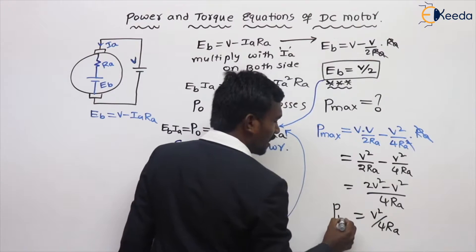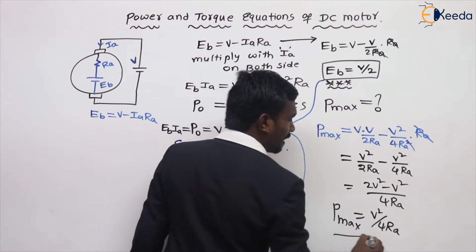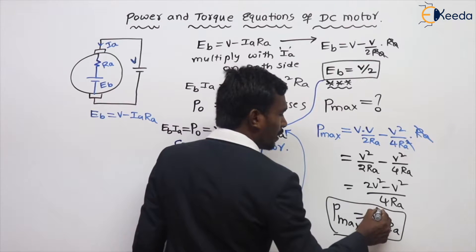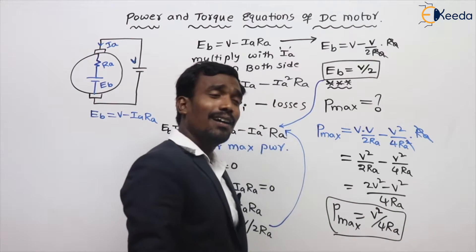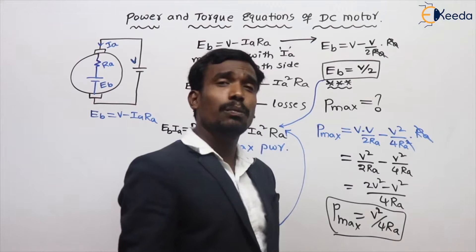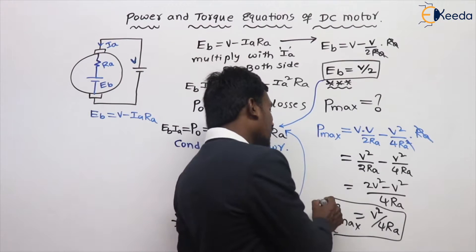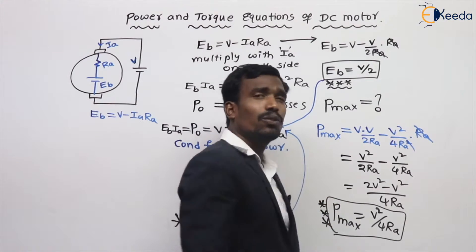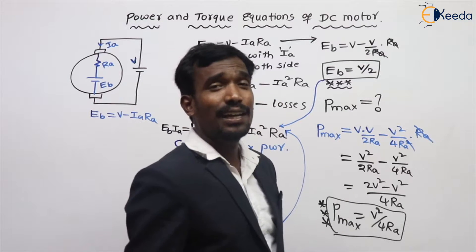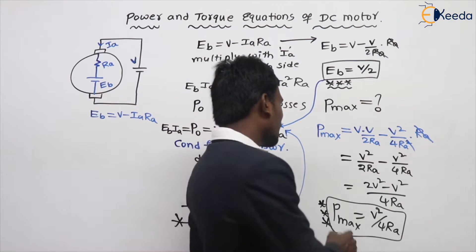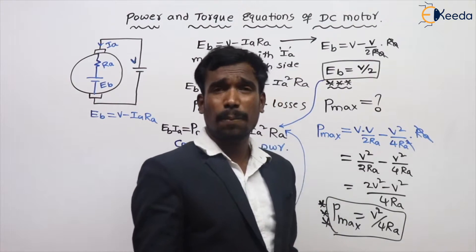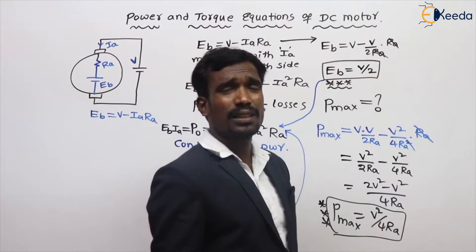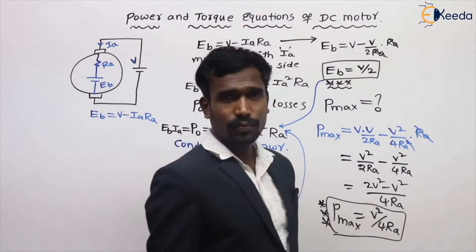This is the familiar equation from the maximum power theorem. According to maximum power theorem, P max equals V squared by 4RA. This is already a well-known formula, so you should remember this formula only.